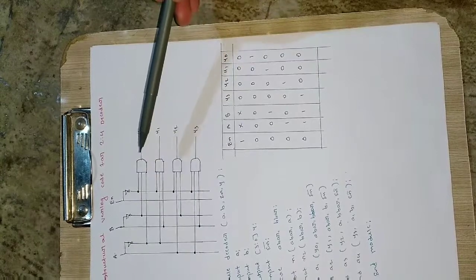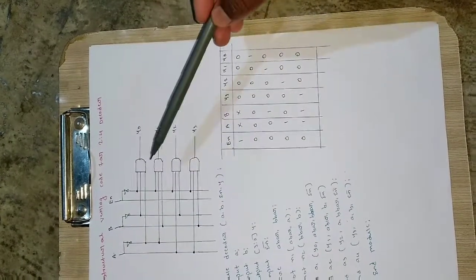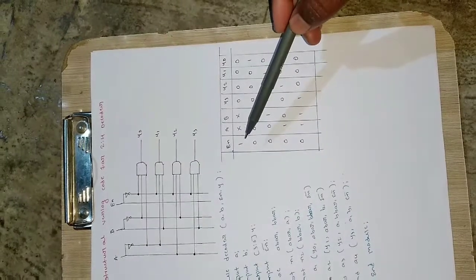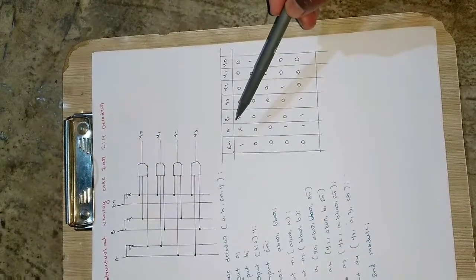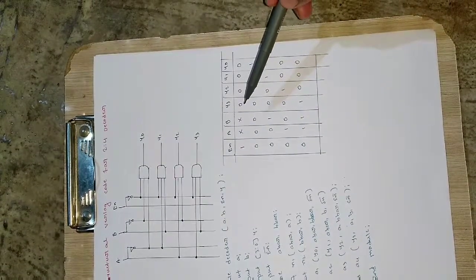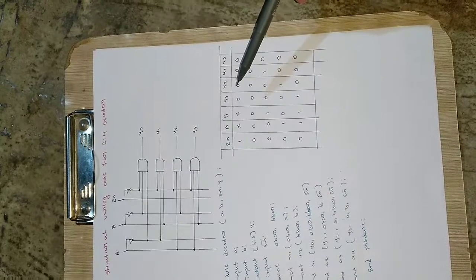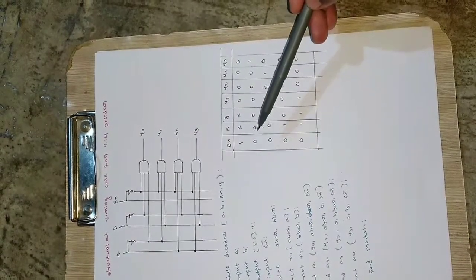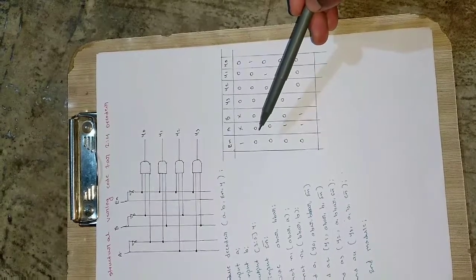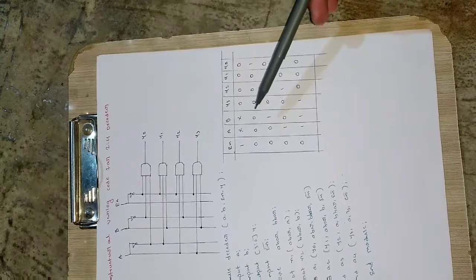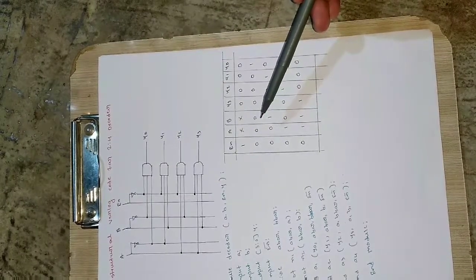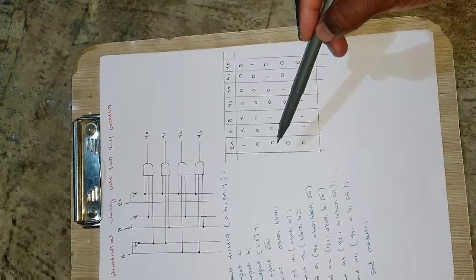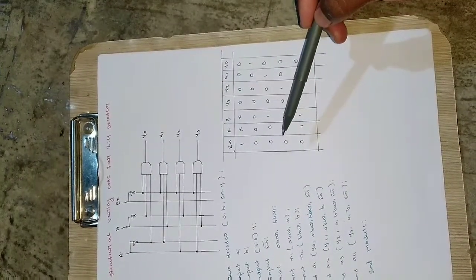The inputs are A and B. I will be taking A-bar and B-bar as needed, then connecting to four different NAND gates 1, 2, 3, and 4. When enable is 1, it doesn't matter what A and B are — the output will be all zeros (0, 0, 0, 0) since the decoder is off. When enable becomes 0, it is operational and checks A and B. For A=0, B=0, Y0 will be high and the rest will be 0.